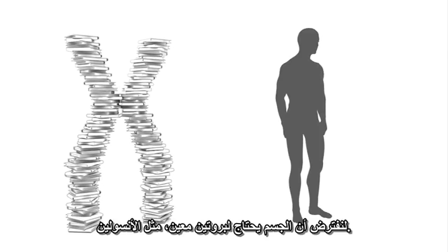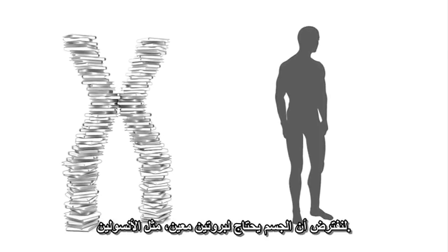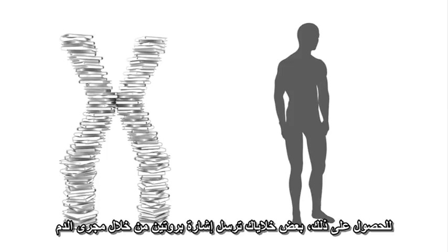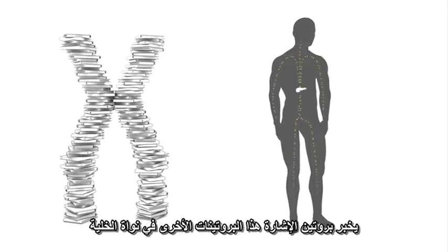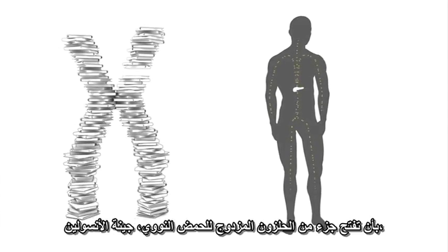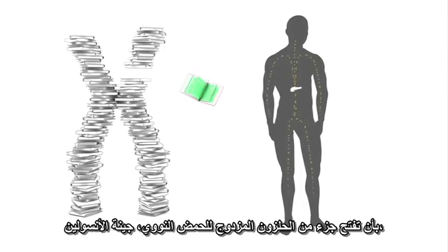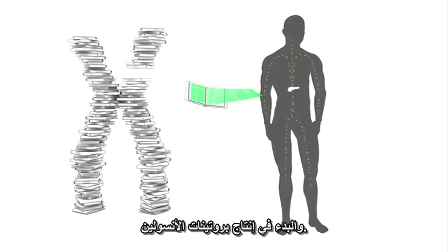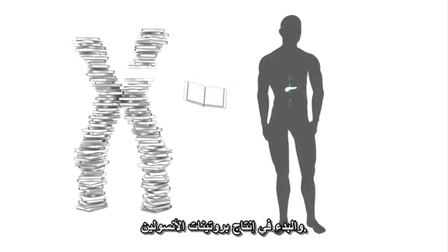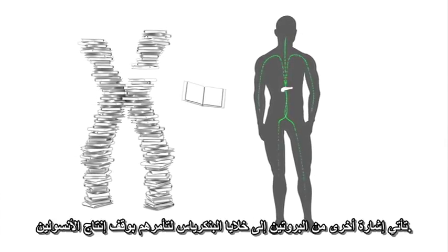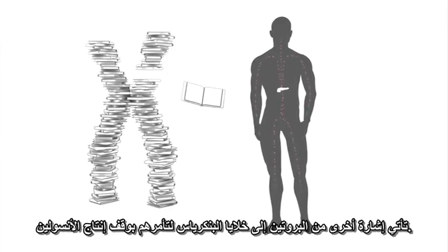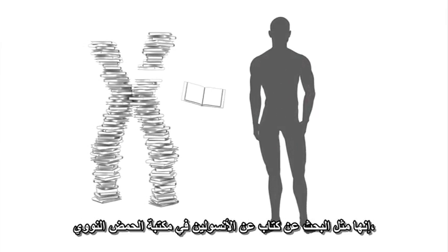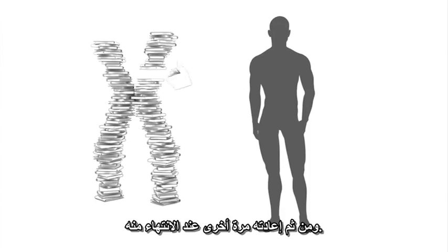Let's say your body needs a particular protein, like insulin. Some of your cells send a protein signal through the bloodstream to the cells in your pancreas, where insulin is made. That signal protein tells other proteins in the cell's nuclei to open up a part of the DNA double helix — the insulin gene — and start making insulin proteins. As soon as enough insulin has been produced, another signal protein tells the pancreas's cells to stop making insulin. It's like looking up a book in the DNA library about insulin and then putting it back when you're done.